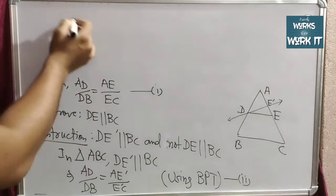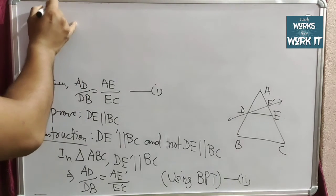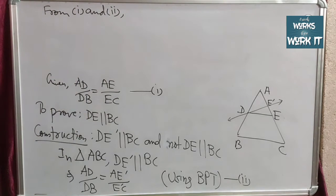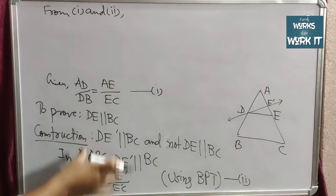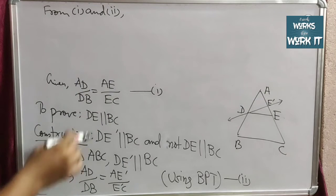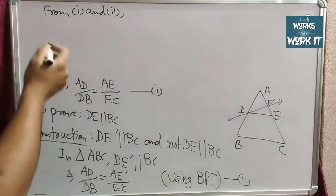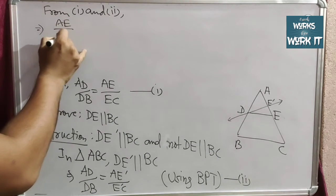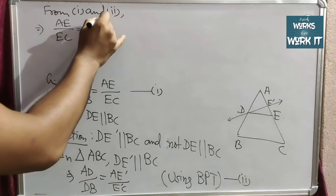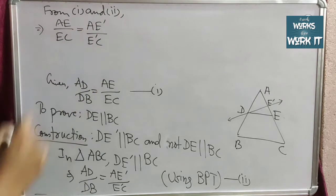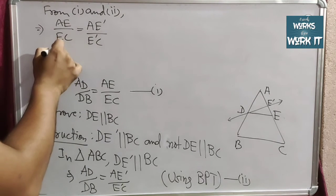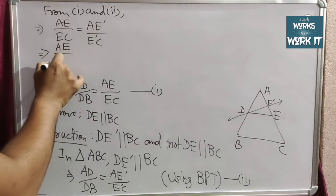Taking equations (1) and (2) together, the common term AD/DB appears on both sides, so they cancel. What we get is: AE/EC = AE'/E'C. Now we will add 1 to both sides of this equation.